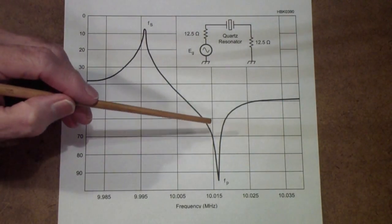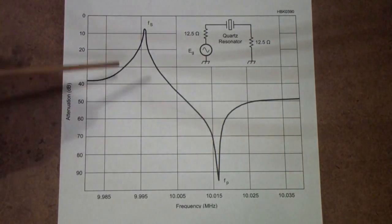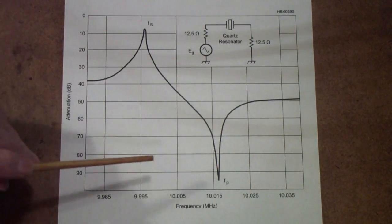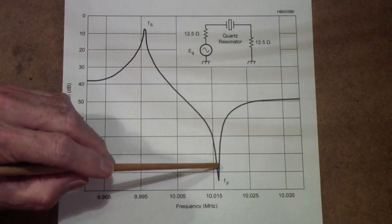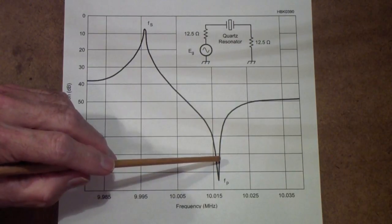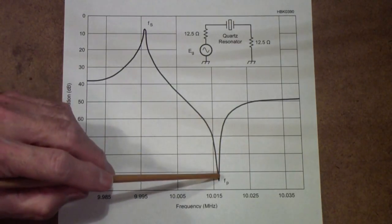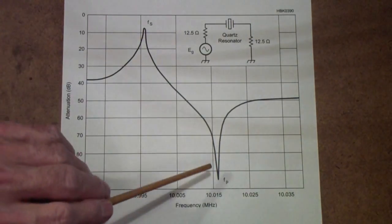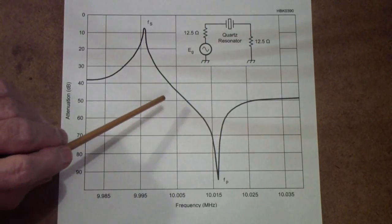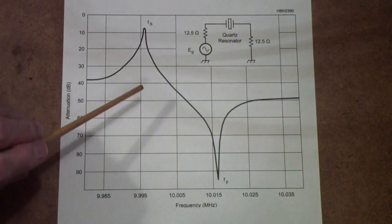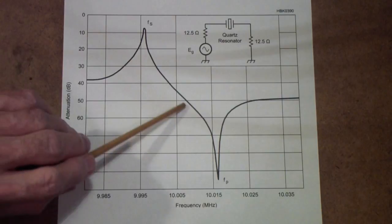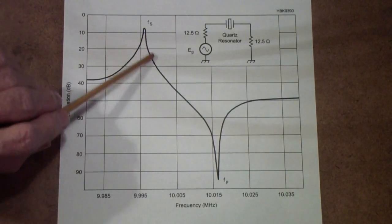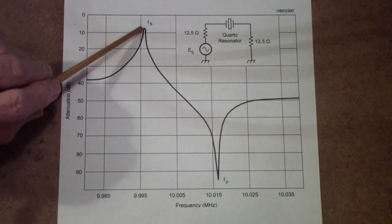Now, what you are doing when you adjust a crystal filter is, in essence, you're controlling this null. That is, what you're trying to do is to reduce this null or to move it to a more appropriate place so that you get really sharp attenuation away from the central frequency.